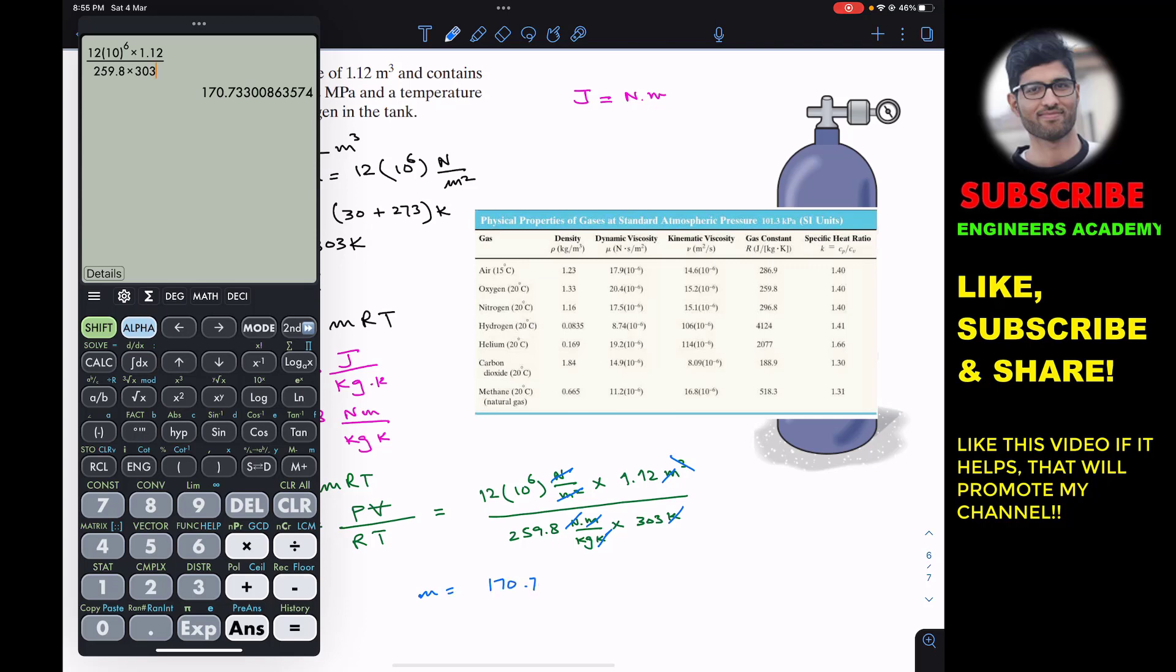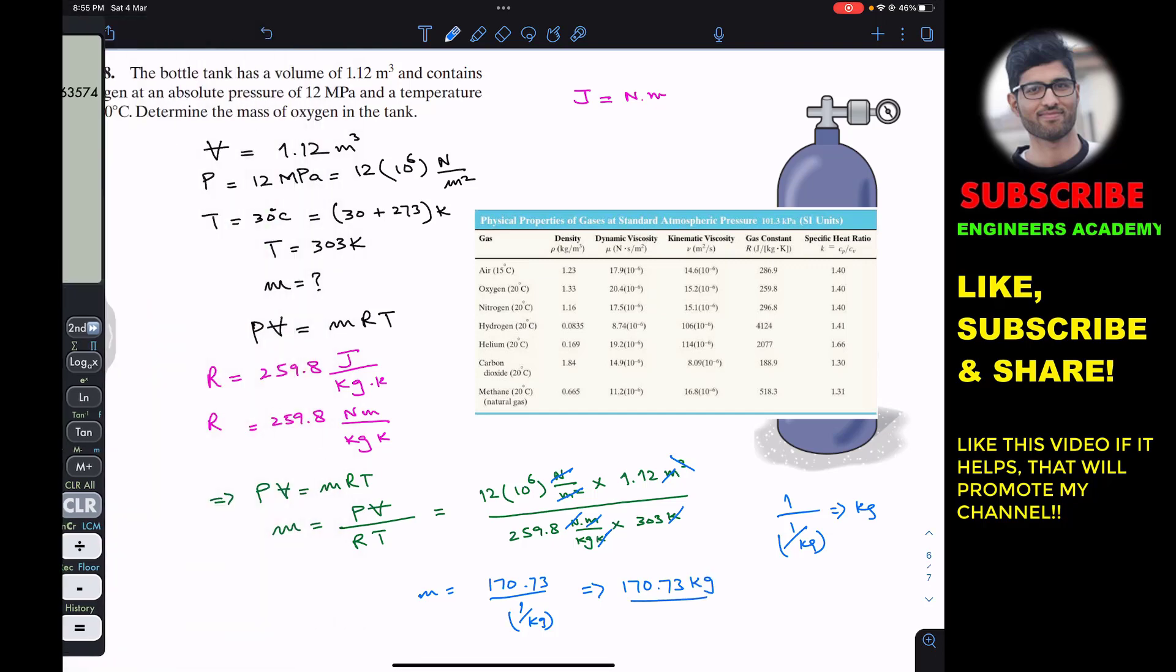Here in the denominator we have 1 divided by kilogram, which is actually 1 divided by 1 divided by kilogram, which equals kilogram. So we can say that this is 170.73 kilogram oxygen in the given tank of a volume 1.12 meter cube at 12 megapascal and 30 degrees Celsius.